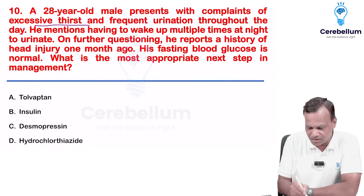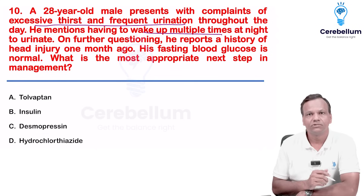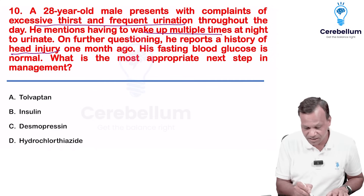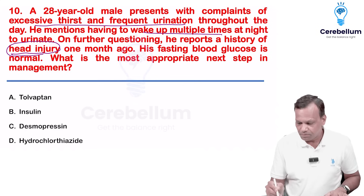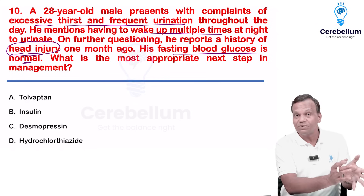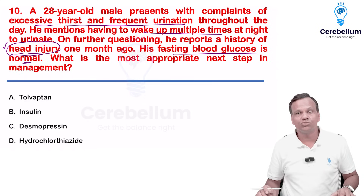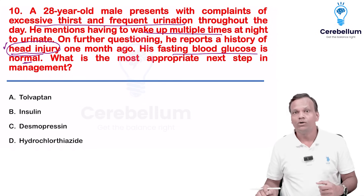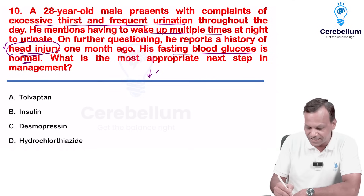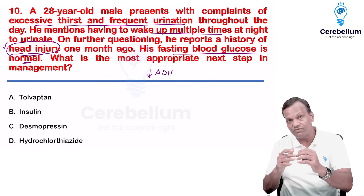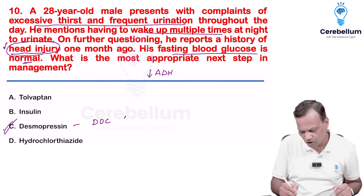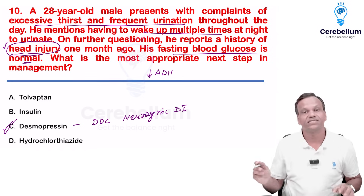A patient has excessive thirst, frequent urination, and wakes up multiple times at night. There is a history of head injury, but blood glucose is normal — so it cannot be diabetes mellitus. This is diabetes insipidus: due to head injury, there may be damage to the posterior pituitary, leading to neurogenic diabetes insipidus from decreased ADH/vasopressin. We give vasopressin from outside — desmopressin is the drug of choice for neurogenic diabetes insipidus.